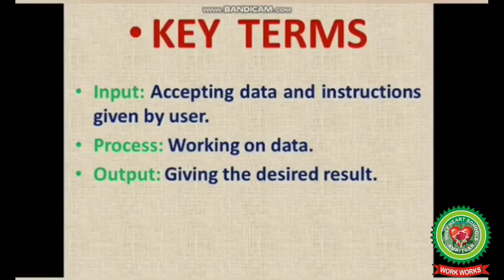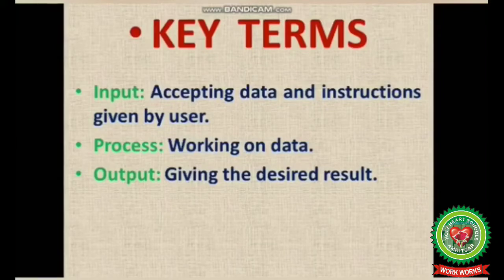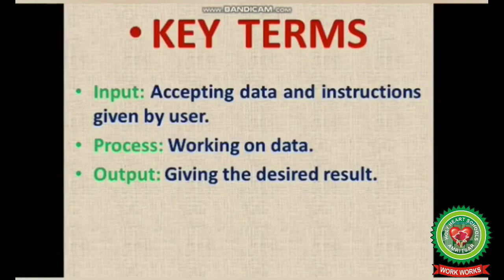Number six, software — a set of instructions given to the computer. Number seven, input — accepting data and instructions given by the user. Number eight, process — working on data. Number nine, output — giving the desired result.